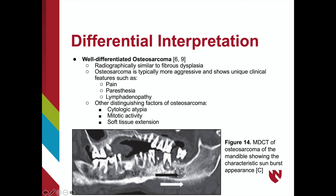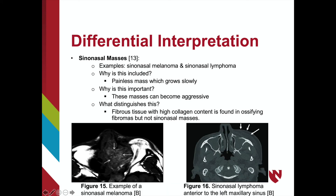The image shows an osteosarcoma of the mandible demonstrating the characteristic sunburst appearance. The last differential interpretation is sinonasal masses. Some examples include sinonasal melanomas and lymphomas, which are painless masses that grow slowly. These lesions have the potential to become aggressive, so they are important to distinguish from ossifying fibromas. Sinonasal masses are often differentiated due to their lack of fibrous tissue, containing a high collagen content that we would see in an ossifying fibroma. Figure 15 shows a sinonasal melanoma, while figure 16 is an example of a sinonasal lymphoma extending anterior to the left maxillary sinus.